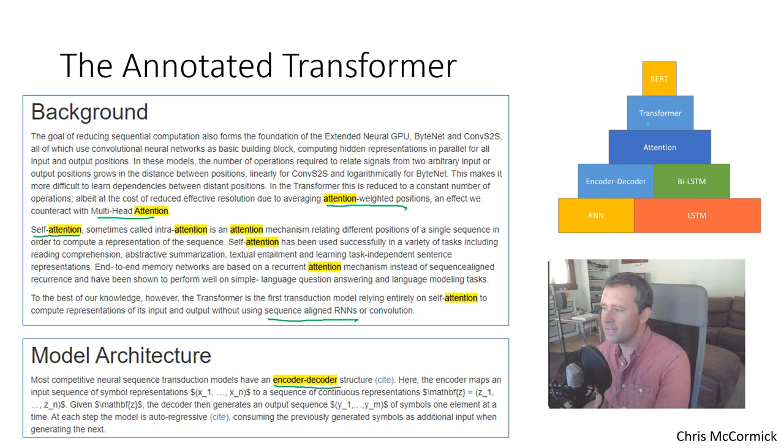So again in order to understand the transformer we need to have a good background in attention, we need to know what an encoder and decoder is, and even though the transformer is not a sequential model it seems like we need to know the recurrent neural network terminology and concepts in order to get through this. All of this feels really discouraging, it seems like we just keep going further down deeper and deeper in this stack and it just feels like there's so much to learn.